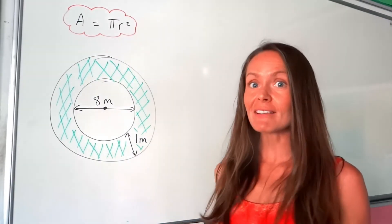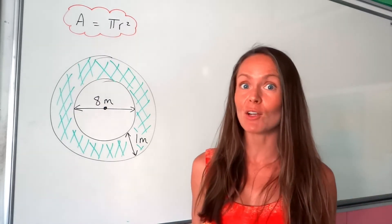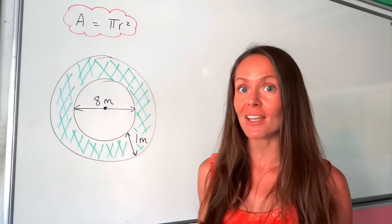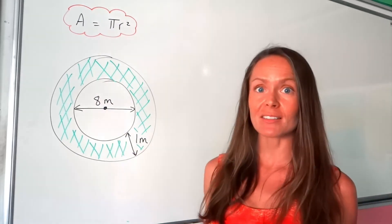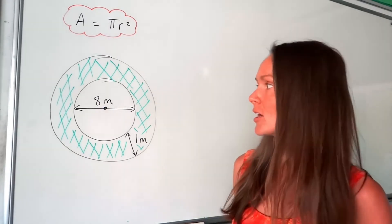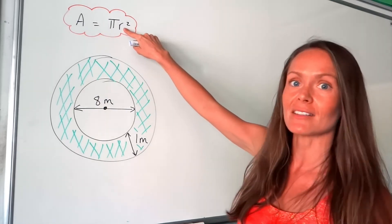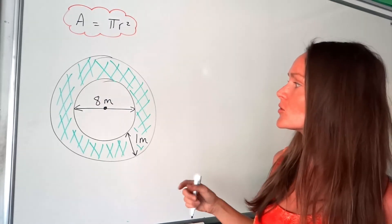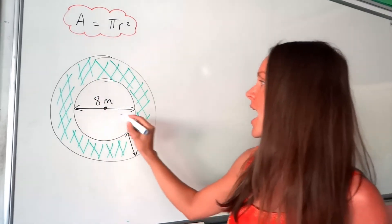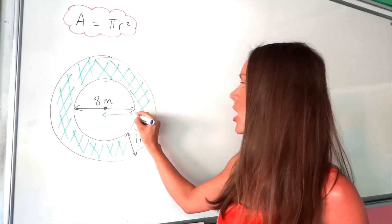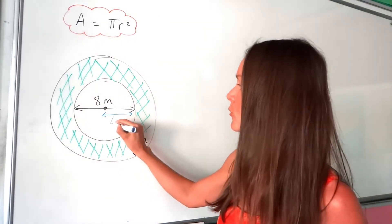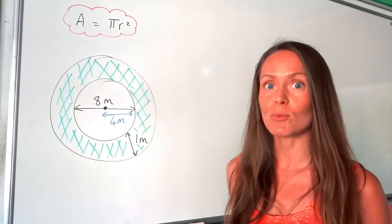This question is very similar to the last one — we're working out the area of the shaded green ring. We do that by working out the area of the larger circle and subtracting the smaller circle inside. Before we can work out the area, we need to know the radius of both circles. For the small circle, the diameter is 8 m, and the radius is always half the diameter — 8 divided by 2 gives 4 — so the radius of the smaller circle is 4 m.